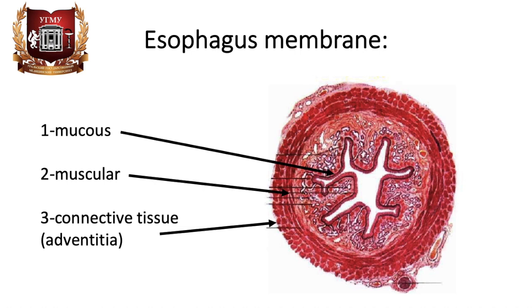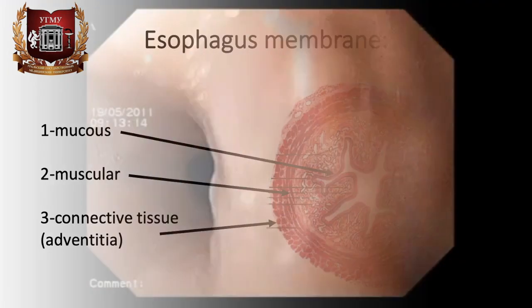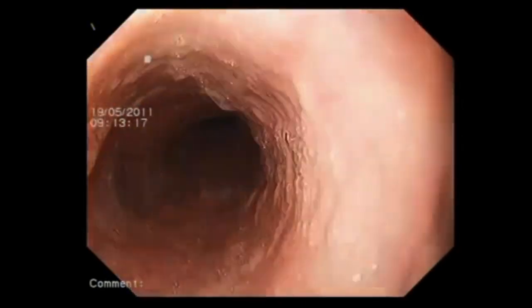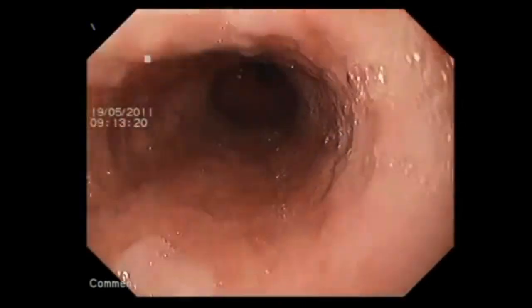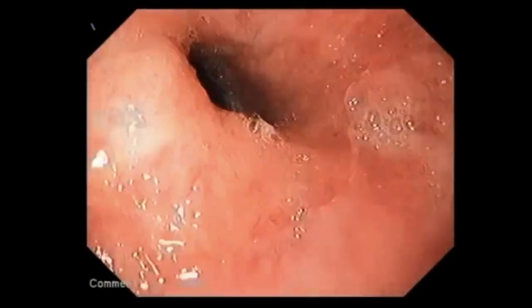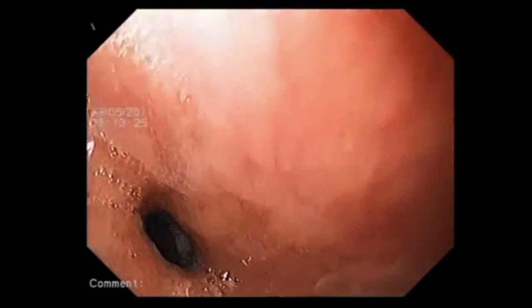On the mucous membrane, longitudinal folds are formed which are stretched during the passage of the food lump. Longitudinal folds give the esophagus a star-like appearance on cross-section. The mucous membrane contains mucous glands that facilitate the passage of food. The longitudinal folding promotes the movement of fluids along the grooves between the folds, and allows stretching of the esophagus when passing dense lumps of food. This is facilitated by a loose submucosal layer, which gives the mucous membrane greater mobility. There are lymphoid nodules in the submucosal base.